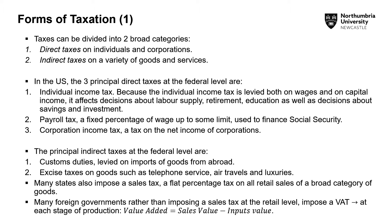In the U.S., there are three principal direct taxes at the federal level. First, we have an individual income tax, where an individual earns income and part of it is paid in taxes. Second, we have a payroll tax, which comes off the individual's income and is directly charged by the employer, used to finance Social Security and other social programs. Third, we have a corporate tax, charged on the income of corporations. These three types of direct taxes exist in the United States, and very similar variants appear across all nations in the world.